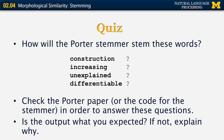Let's have a short quiz. I want to give you four words: 'construction', 'increasing', 'unexplained', and 'differentiable'. Take a minute to look at the original Porter paper or the stemmer code and figure out what the output should be. You can do this either by running the code or tracing it manually. Look at the output and think whether that is what you expected, and if not, try to think why.